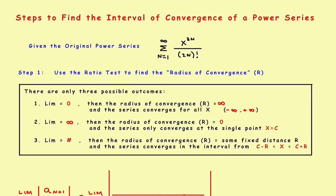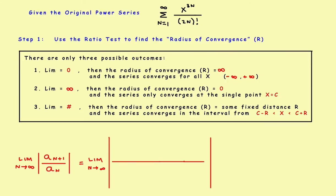As you solve the problem, there are really only three possible outcomes when you find this limit. The limit is either going to equal 0, equal infinity, or equal some fixed number. If the limit equals 0, the radius of convergence is infinity and the series converges from negative infinity to positive infinity. If the limit equals infinity, the radius of convergence is 0 and the series only converges at the single center point x = c. And if the limit equals some fixed number, the radius of convergence is that fixed distance r.